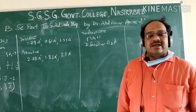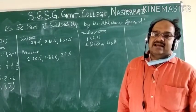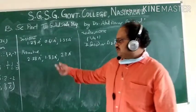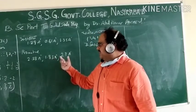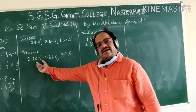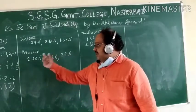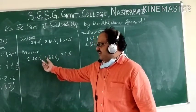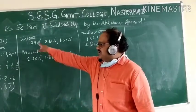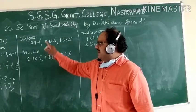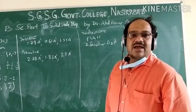The next numerical question: we have given a crystal cell with three primitives whose primitive constants are A = 2.58, B = 1.83, C = 2.7. It has already defined that primitives are 2.58, 1.83, 2.7, and the intercepts are coming as 1.29, 0.61, and 1.35.